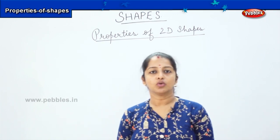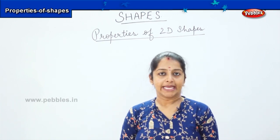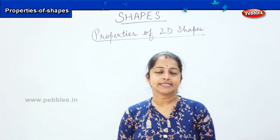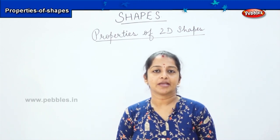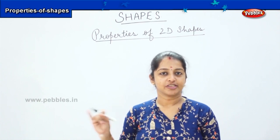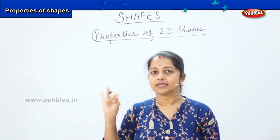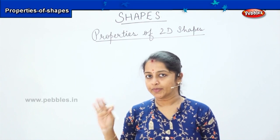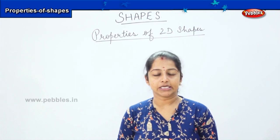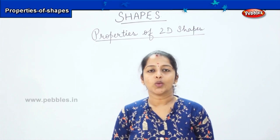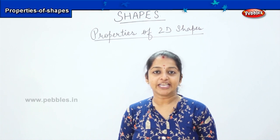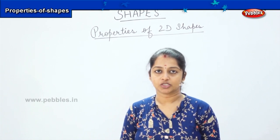The next topic we are going to cover is the properties of 2D shapes. Just now we learned what are the different types of 2D shapes. The first one was rectangle, the second one was square, the third one was triangle, and the fourth one was circle. So now we are going to discuss the properties of each shape in detail. Shall we begin?